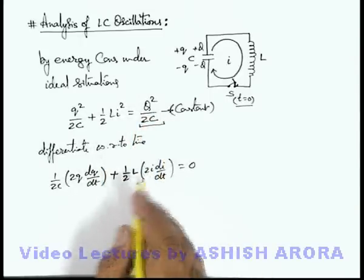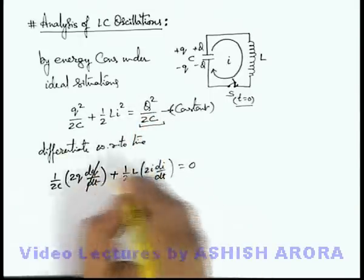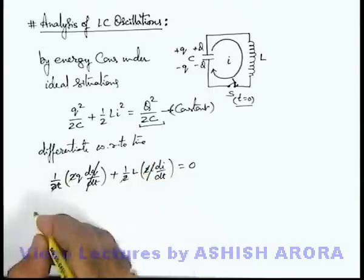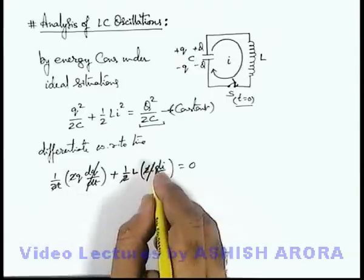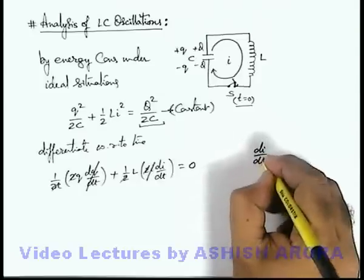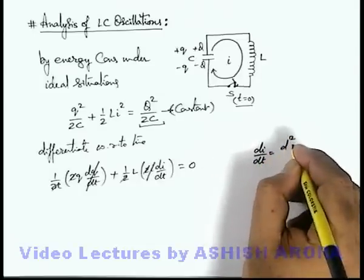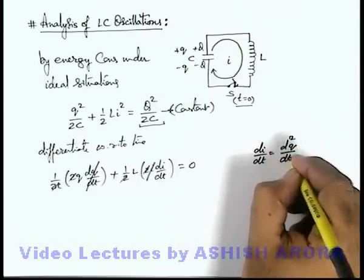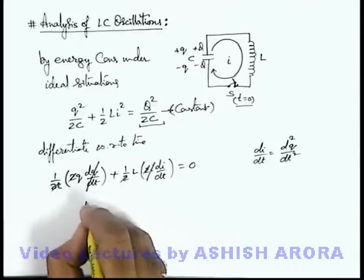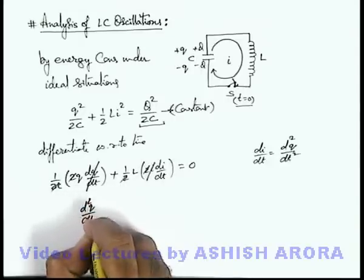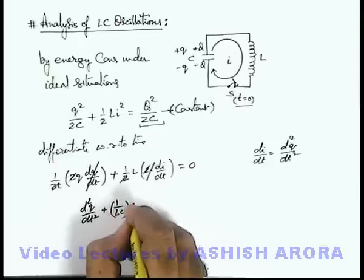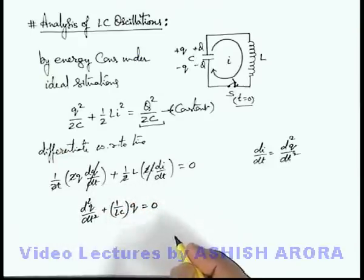In this situation, dq/dt and i cancel out, and the factor of 2 cancels as well. We can write di/dt as the second derivative of charge with respect to time, so this simplifies to d²q/dt² plus (1/LC)·q equals zero.